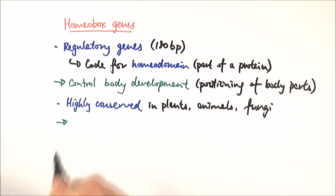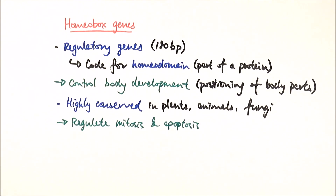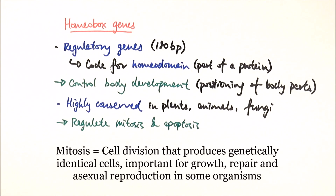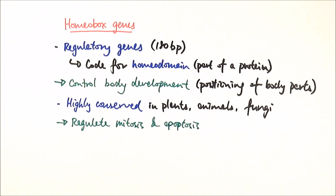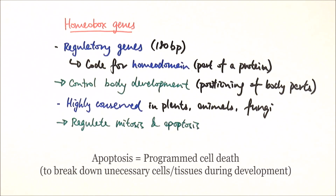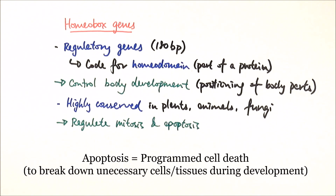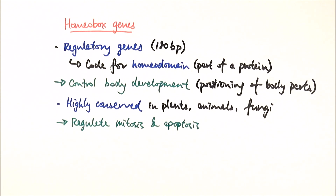Another function of homeobox genes is that they regulate mitosis and apoptosis. Mitosis is the cell division that creates genetically identical cells, crucial to growth, repair, and asexual reproduction in certain organisms. Apoptosis is essentially the opposite — it is programmed cell death. For example, when we are still a fetus developing in the womb, we have webbed fingers with tissue between them.